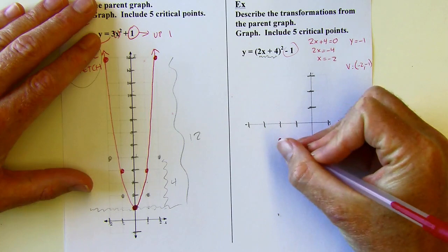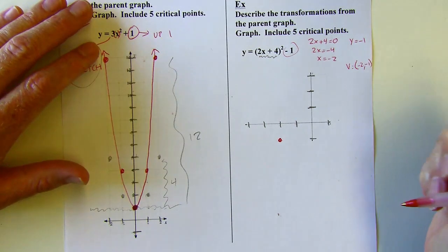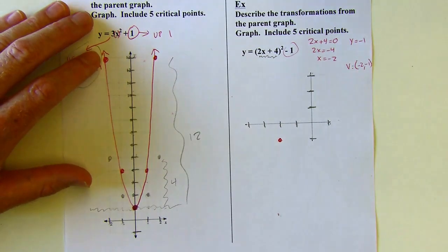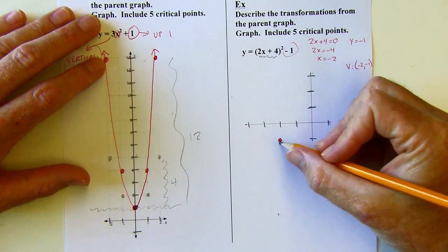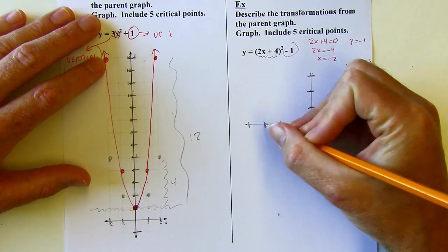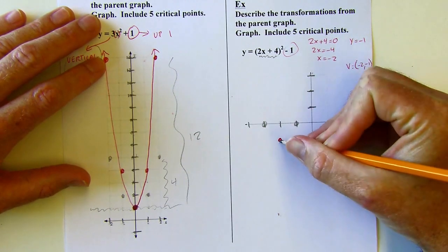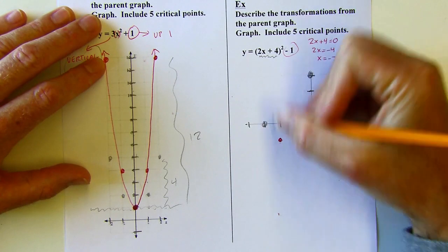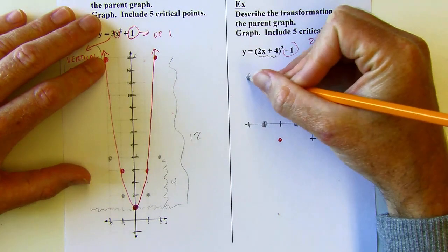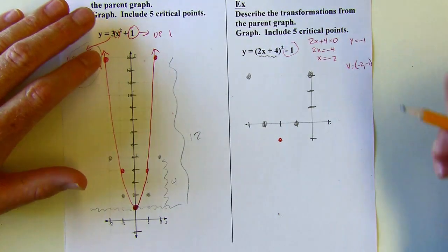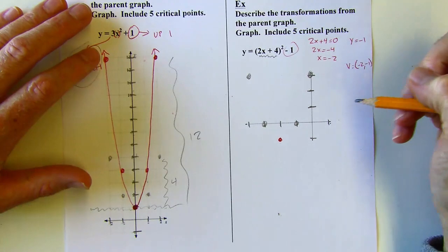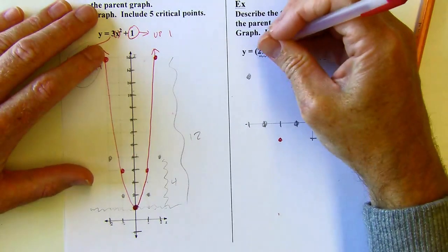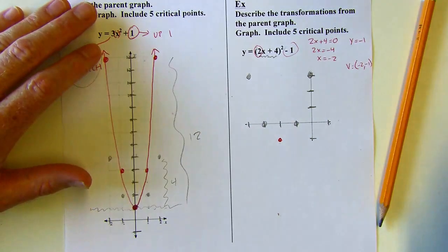Solving: two x plus four equals zero, subtract four, then divide by two gives x equals negative two. The y value is just the constant, negative one. So the vertex is at (negative 2, negative 1) — not (negative 4, negative 1). That's two left, one down. Then I sketch in my ghost points: up 1 to the right 1, up 1 to the left 1, up 4 to the right 2, up 4 to the left 2. This is what it would look like with no stretch or compression.